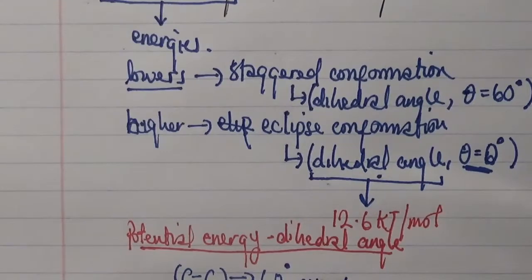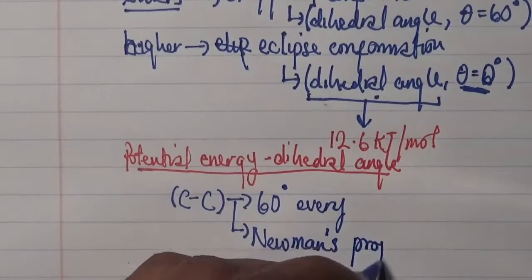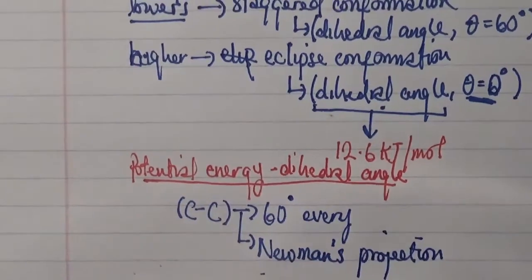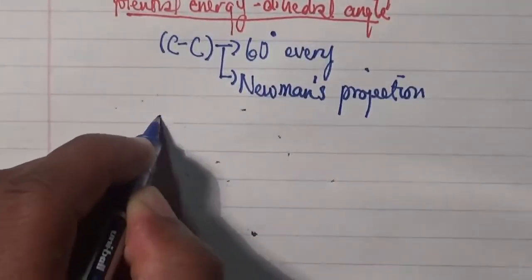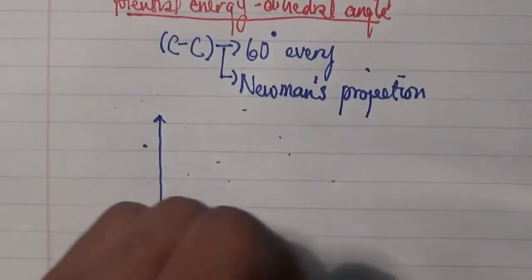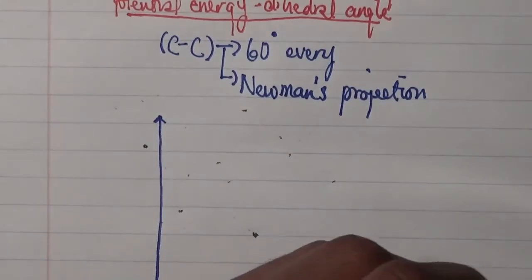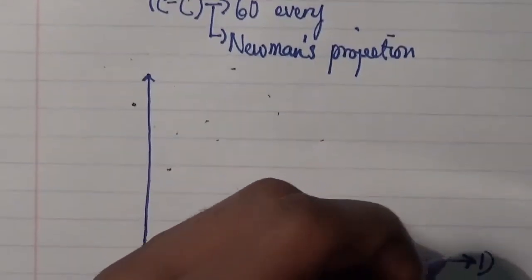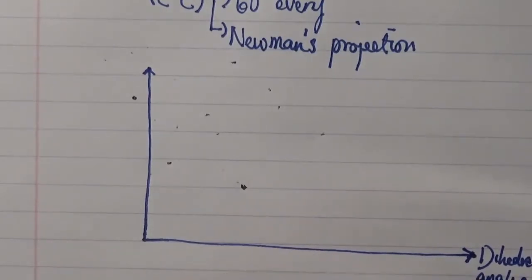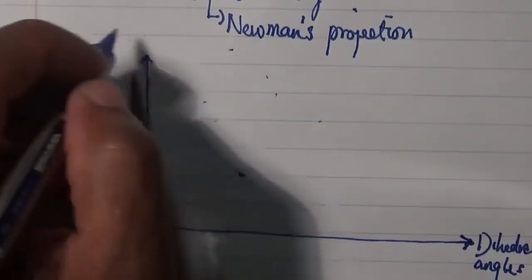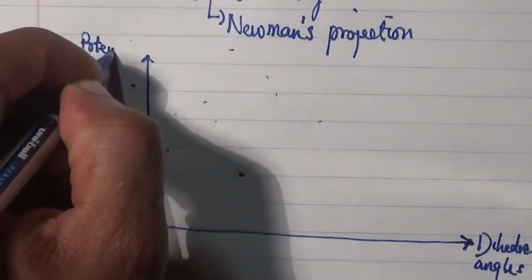And this will be done by using the Newman's projection. So in this case here, I'm going to draw the graph here and show you the relationship between the potential energy and the dihedral angle. On the y-axis, we're going to have the potential energy.